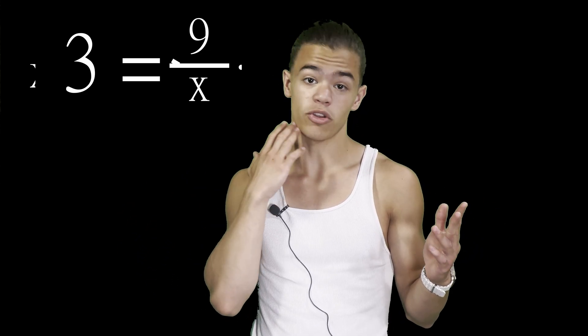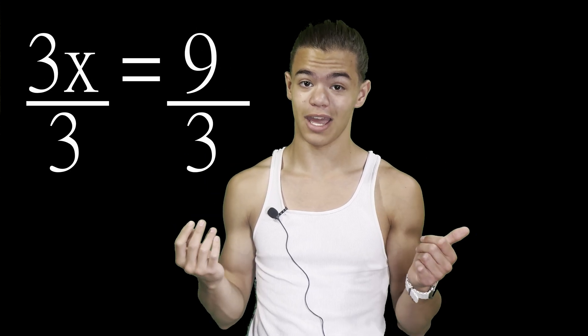Look at this equation real fast. 3x equals 9. What's the value of x? It's pretty simple — just divide by 3 on both sides and you get x equals 3. Now look at this equation: 3 equals 9 over x. It's a little more to do, but it's pretty straightforward. Multiply by x on both sides and then divide by 3 again and you get x equals 3. Now look at this equation: 3x equals 0. What's the value of x? All you have to do is divide by 3 on both sides and you get 0 over 3, which is 0. So x equals 0.